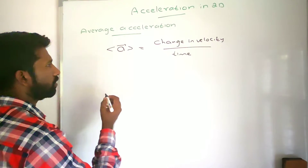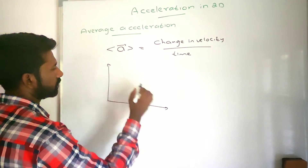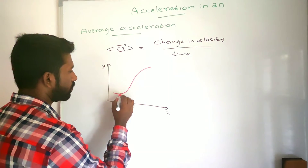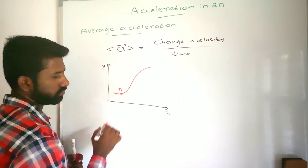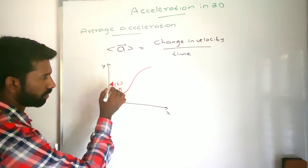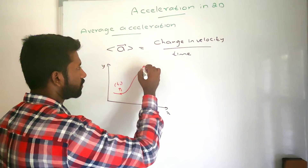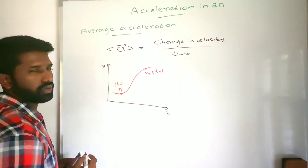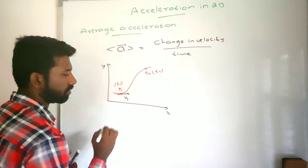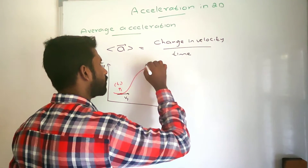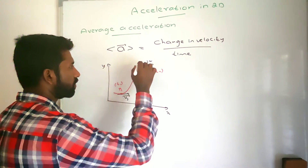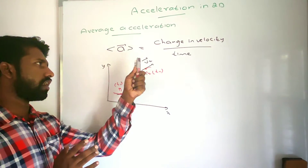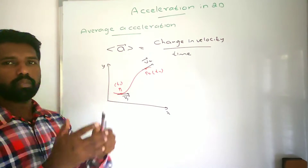If you consider a motion in a plane with an X axis and a Y axis, a particle is moving along a curved path. At time t1 the particle is at point P1, and at time t2 the particle is at P2. The velocity at P1, which we call V1, is found by drawing a tangent, and similarly V2 at P2. There is a change in velocity between these two points.